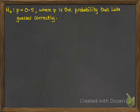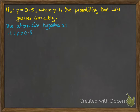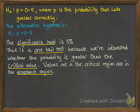The null hypothesis is that the probability p equals 0.5, where p is the probability that Luke guesses correctly. The alternative hypothesis, called H1, is that the probability is greater than 0.5 — in other words, Luke can get it correct more than half the time. The significance level we're testing to is 5%. This is a one-tail test because we're interested in whether the probability is greater than a critical value. In the next video we'll look at two-tail tests, where it can be outside a range both above and below a value.